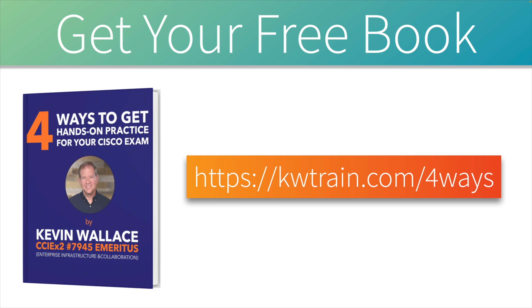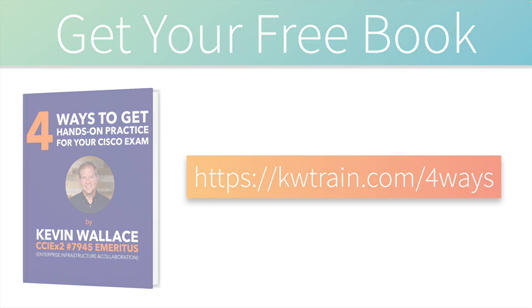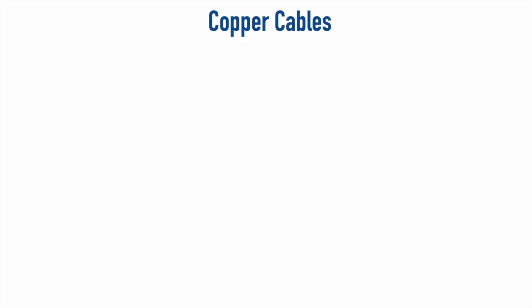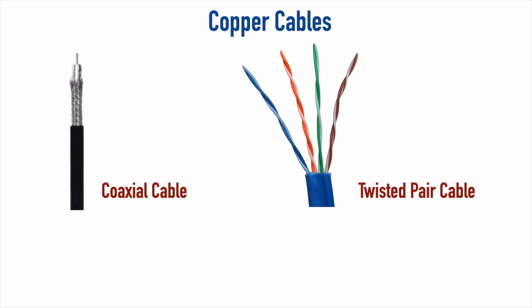Now let's check out this week's video, which is taken from our Network+ video training series covering different types of copper network cabling. Let's talk about some of the different types of copper cabling we might find in a network. We have two specific types we're going to focus on: coaxial cable and twisted pair cable.